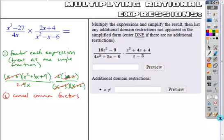And so my final answer when I enter it along the numerator, I just have my x squared plus 3x plus 9. And in my denominator, I have my 2 and I have my x and everything else got cancelled. So this right here is my simplified expression.